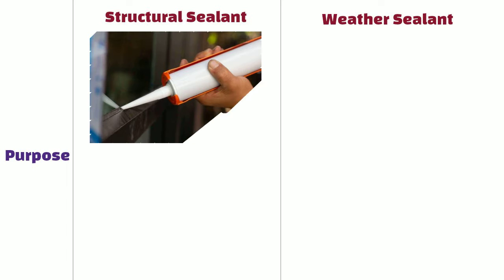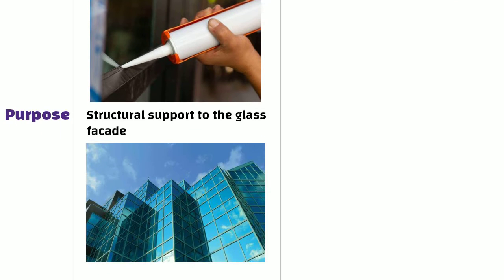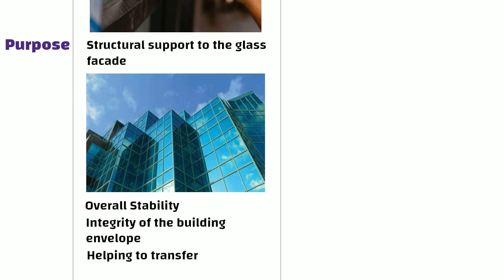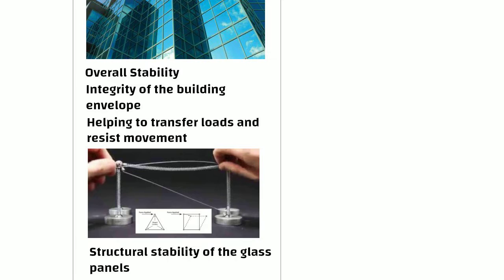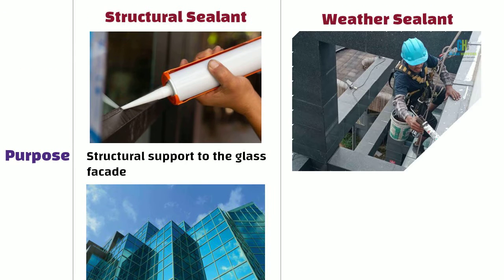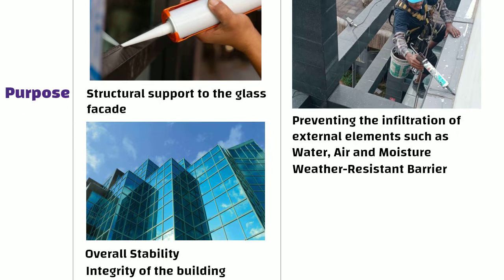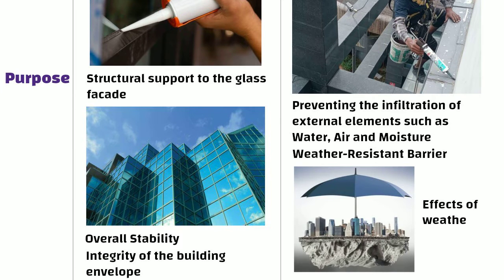Purpose. Structural sealant is designed to provide structural support to the glass facade. They contribute to the overall stability and integrity of the building envelope, helping to transfer loads and resist movement. They are crucial for maintaining the structural stability of the glass panels. Weather sealant, on the other hand, primarily focuses on preventing the infiltration of external elements such as water, air and moisture. They are intended to create a weather resistant barrier protecting the building from the effects of weathering.